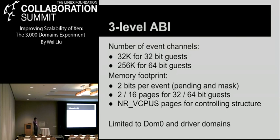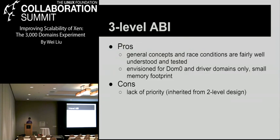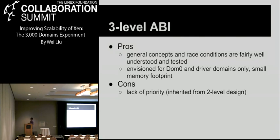The number of event channels supported by the three-level design is 32K for 32-bit guests and 256K for 64-bit guests. The memory footprint requires two or 16 pages for 32 or 64-bit guests respectively for pending and masked bits, plus one page per vCPU for control structures. This ABI is only envisioned for DOM0 and driver domains; other DOMUs use the default ABI, because normal DOMUs can never use so many event channels.